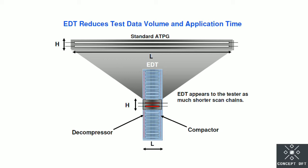This is because in UDT we divide the scan chain into equal lengths. This is the main advantage: the scan chain length in UDT is much smaller compared to standard ATPG.